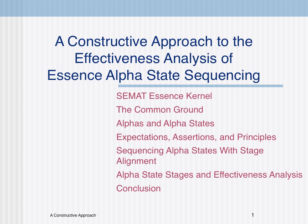Effective sequencing of alpha states hinges on the known effects of incomplete predecessor states on downstream successor states not yet begun or in progress. Essence alpha state stage sequencing presents a dynamic operational view useful in analyzing effectiveness and anticipating and avoiding risk leading to stakeholder dissatisfaction and technical debt. Systematic rules of construction for tracing alpha state sequencing and reasoning about their state alignment assist in this effectiveness analysis, even pinpointing the major milestones that serve as consequential markers of success and the risk triggers that threaten success and lead to the accumulation of technical debt.